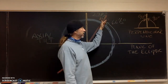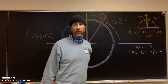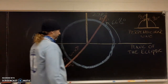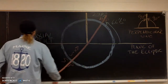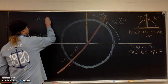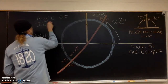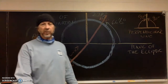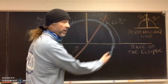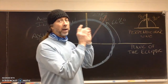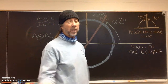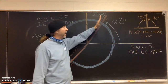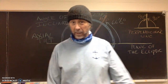So the earth's axis is tilted 66 and a half degrees from the plane of the ecliptic, and 23 and a half degrees from a perpendicular line drawn from the center of the earth and the plane of the ecliptic. We call that the angle of inclination. The axial tilt describes the fact that the earth's axis is tilted; the angle of inclination describes the numbers.